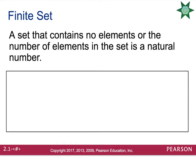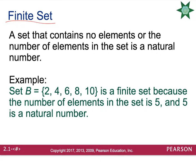Another definition is the word finite. A finite set is a set that contains no elements, or the number of elements is a natural number. A finite set has an ending — it will stop. For example, the set of even natural numbers up to 10 is {2, 4, 6, 8, 10}. Notice you're able to count them — there are 5 elements. If you're able to count how many elements there are, that would be considered finite.